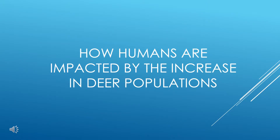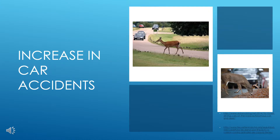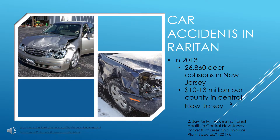I would now like to begin discussing the impacts on human affairs caused by the exponential growth in deer population. The first is the rise in car accidents related to deer. Oftentimes, roads are built along the edge of forests where deer often congregate. As the number of cars and deer continue to rise, these accidents will likely continue to rise as well. The Raritan Basin is no exception to this.